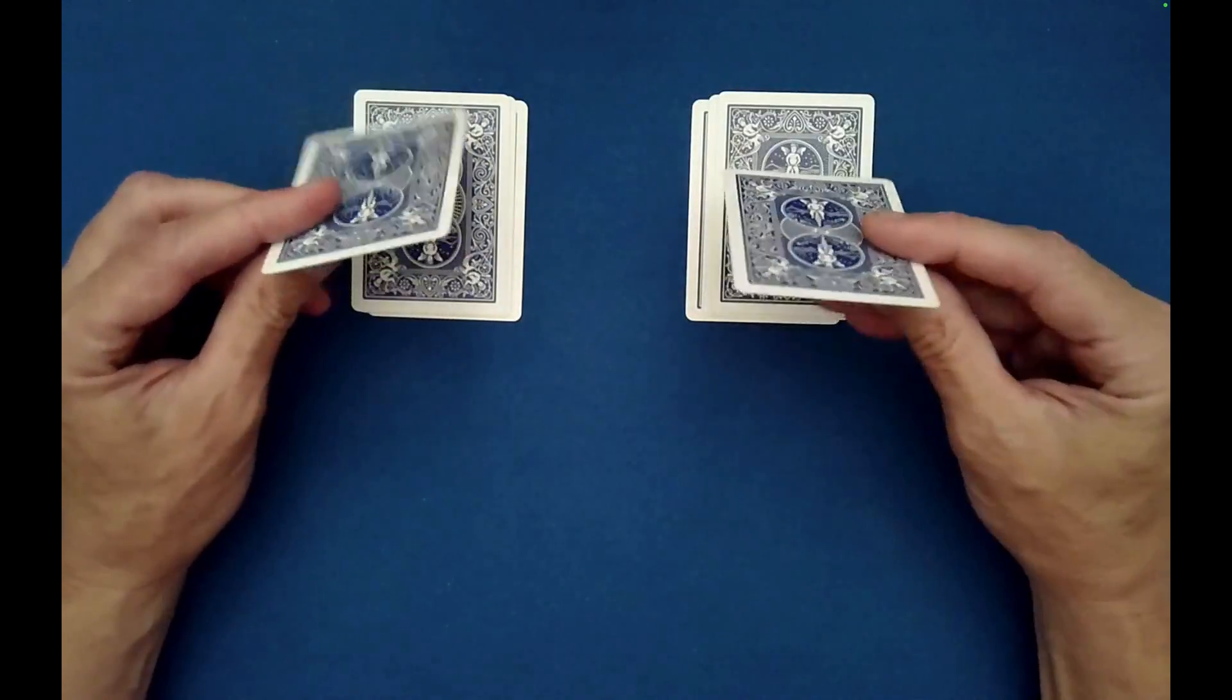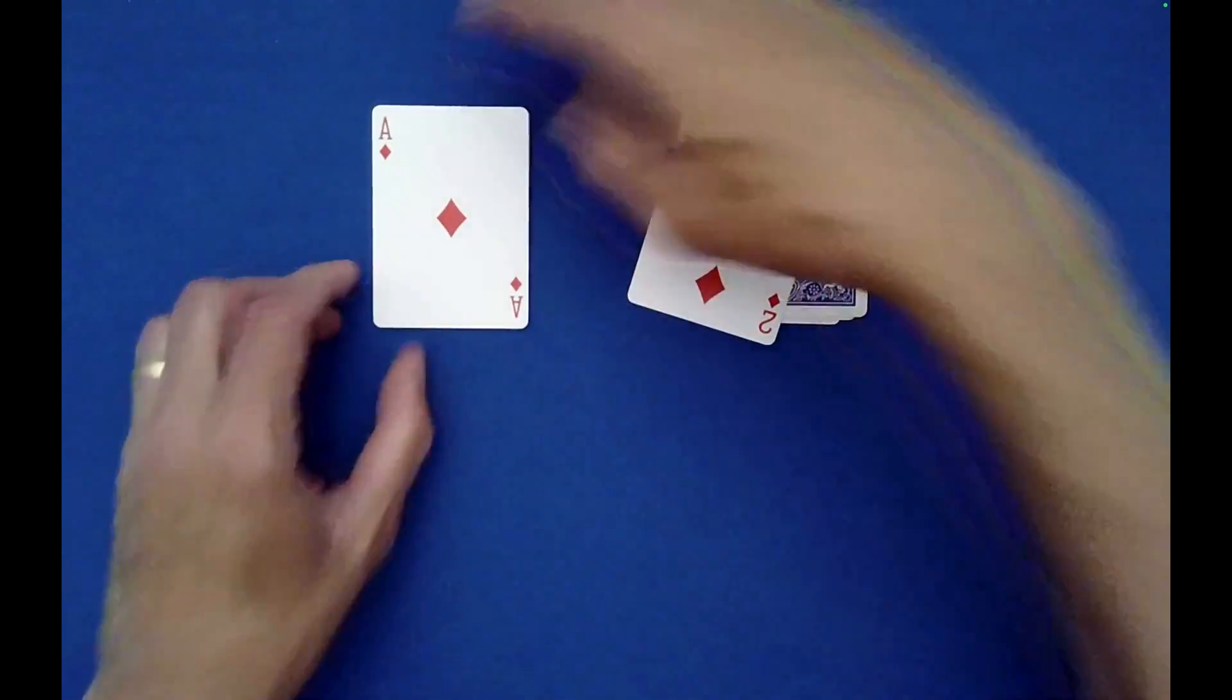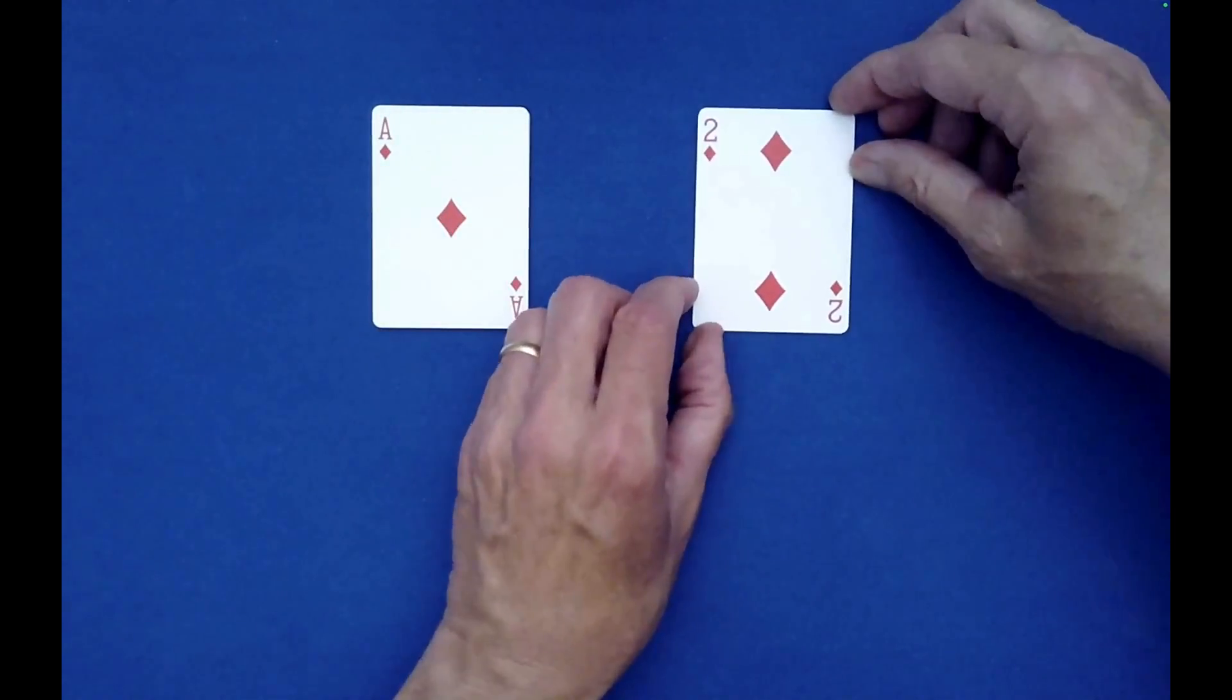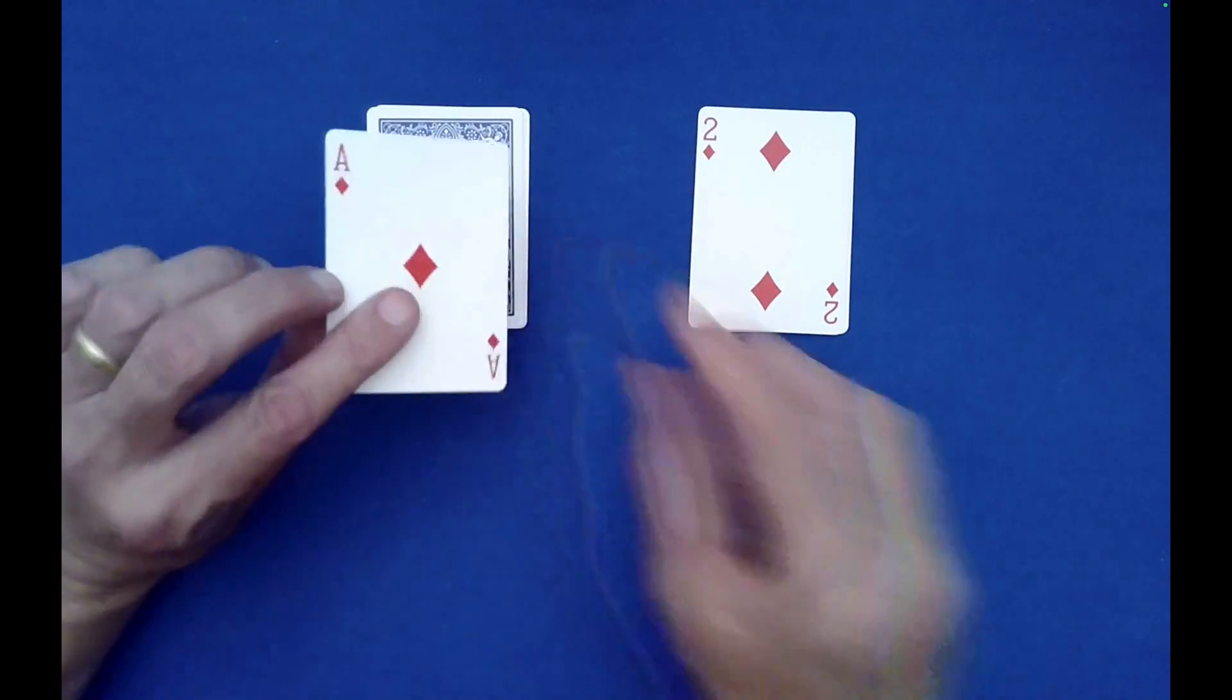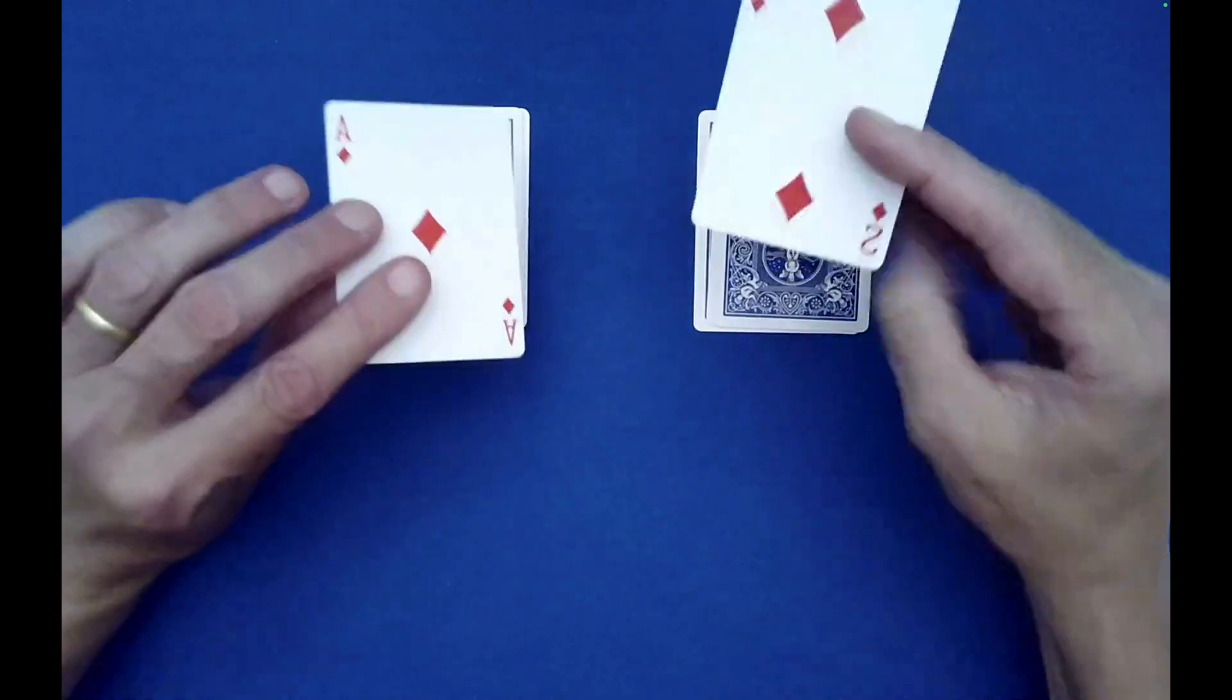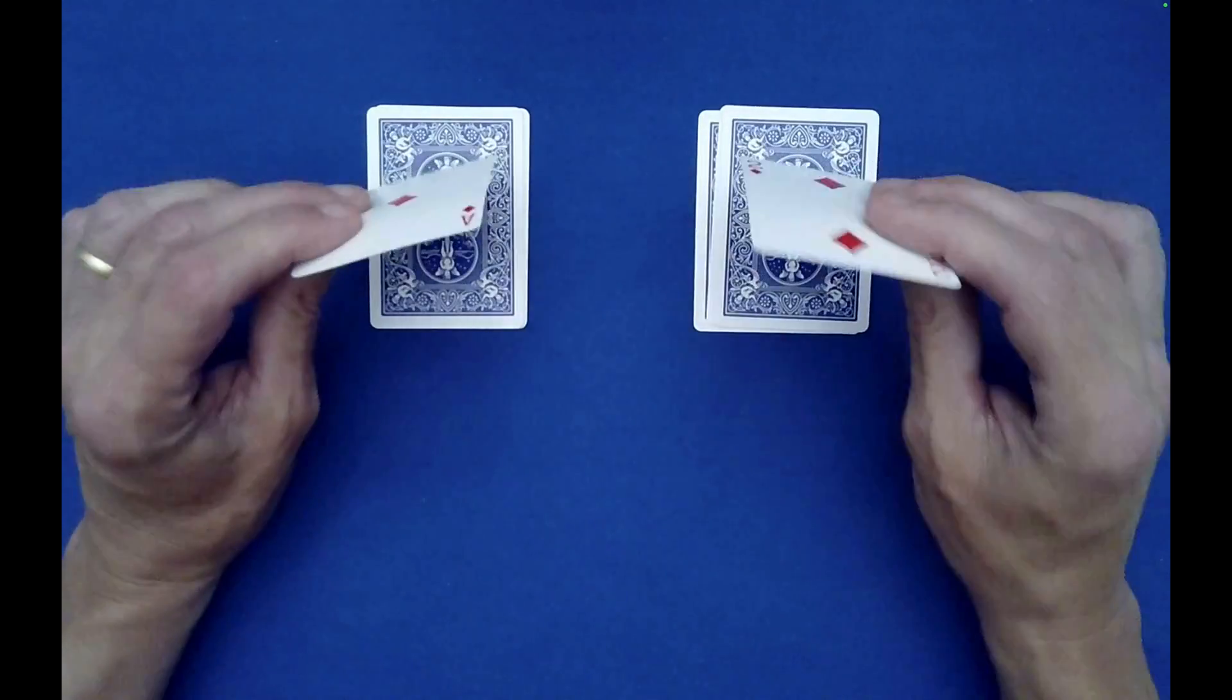Now, what I thought we would do just to keep things not too complicated to help you see what's going on. Let's say the top card for spectator A is the Ace of diamonds, and for spectator B, it's the two of diamonds. So they would note those.